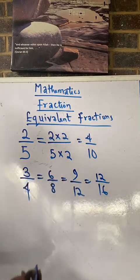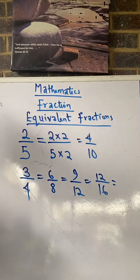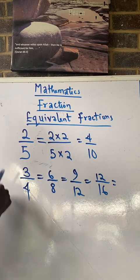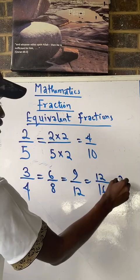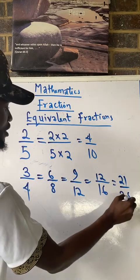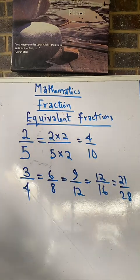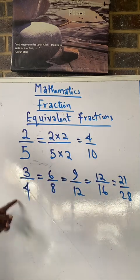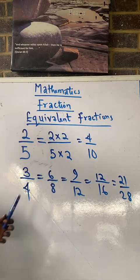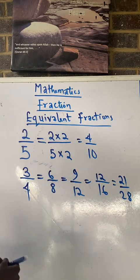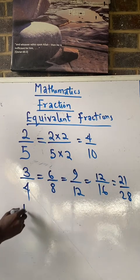Multiply both by five, or even by seven: seven times three gives me twenty-one, seven times four gives me twenty-eight. So twenty-one over twenty-eight is still equivalent to three over four. It is not only multiplication that can give us equivalent fractions.